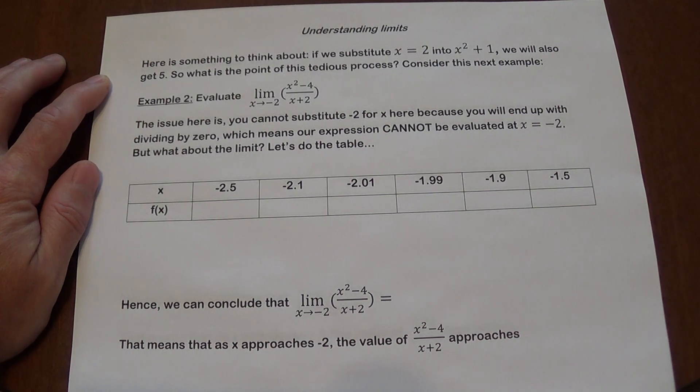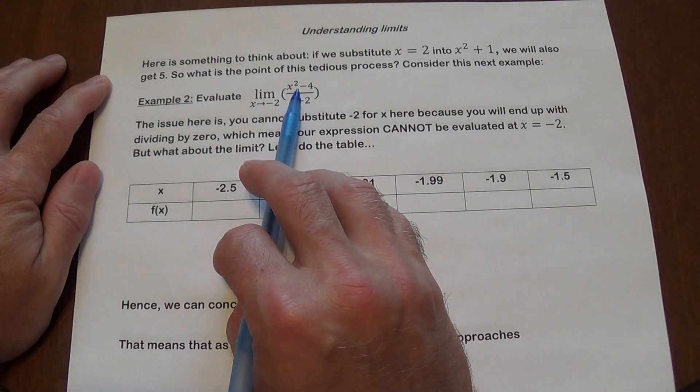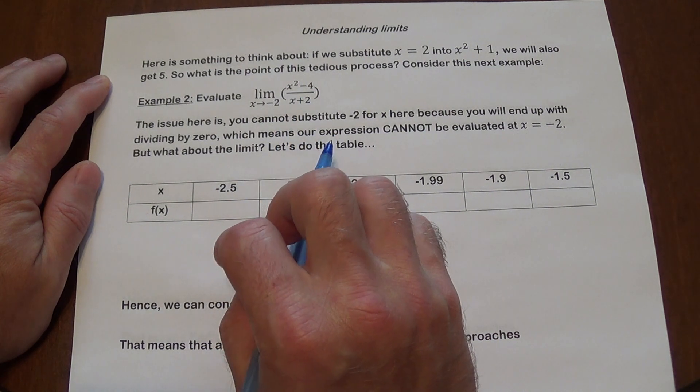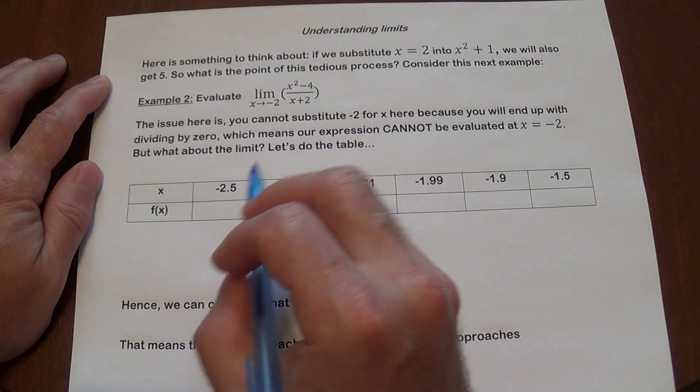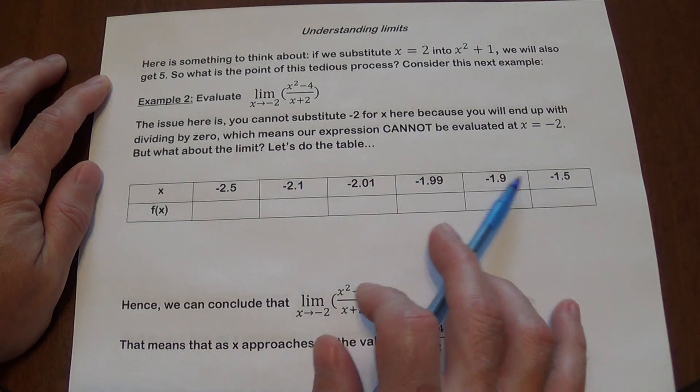But what about the limit? So if you start plugging in the values into this expression, the easiest thing might be to plug it in the graphing calculator and just use the value feature to do that. So at negative 2.5, again, I have numbers here approaching negative 2 from the left and from the right.